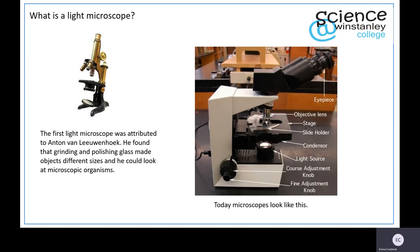The first light microscope was attributed to Anton van Leeuwenhoek in the 1600s. He found that grinding and polishing glass made objects different sizes when you looked at them, and from this he could now look at microscopic organisms such as bacteria and cells from his own body.